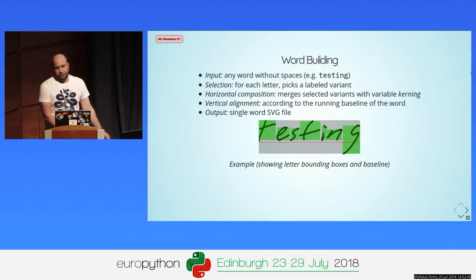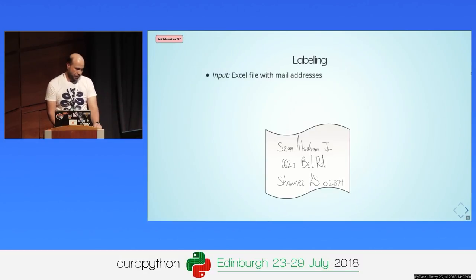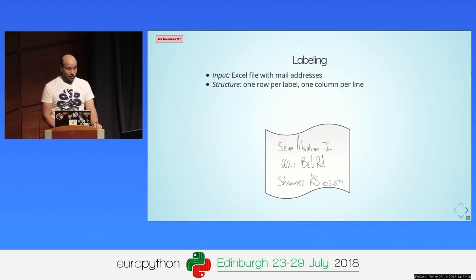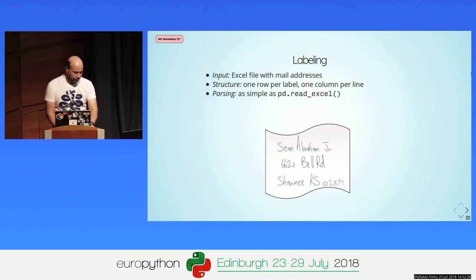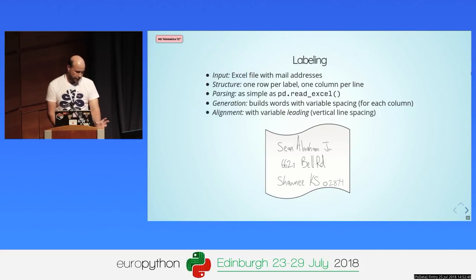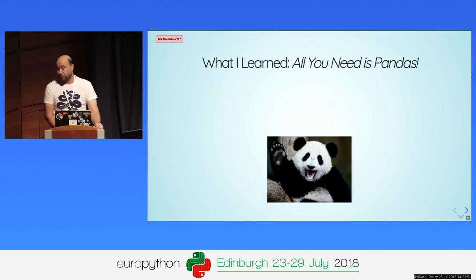It outputs a single SVG file for that word in the same size. For the labeling stage — it takes as input an Excel file with mail addresses. No surprise here — pandas works great with this. The structure is one row per label, one column per line. It's as simple as parsing using pandas read_excel. The generation stage builds words with variable spacing, one for each column, and the alignment is done with variable leading — the vertical equivalent of kerning, the spacing between the lines.